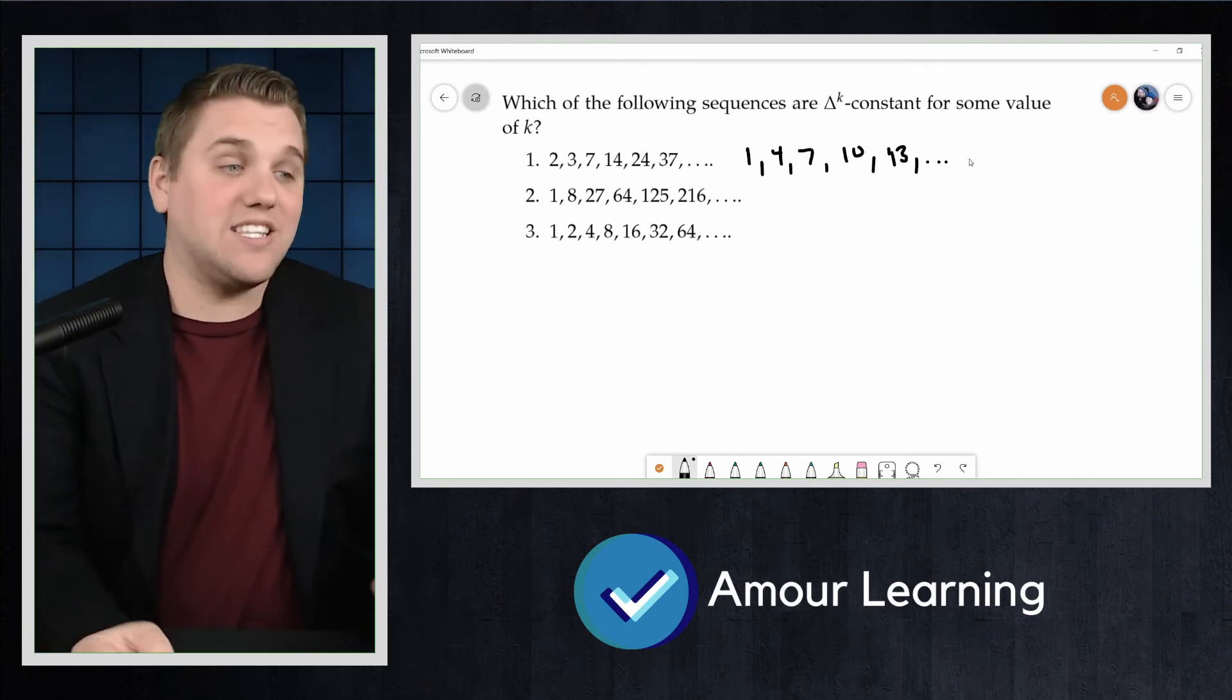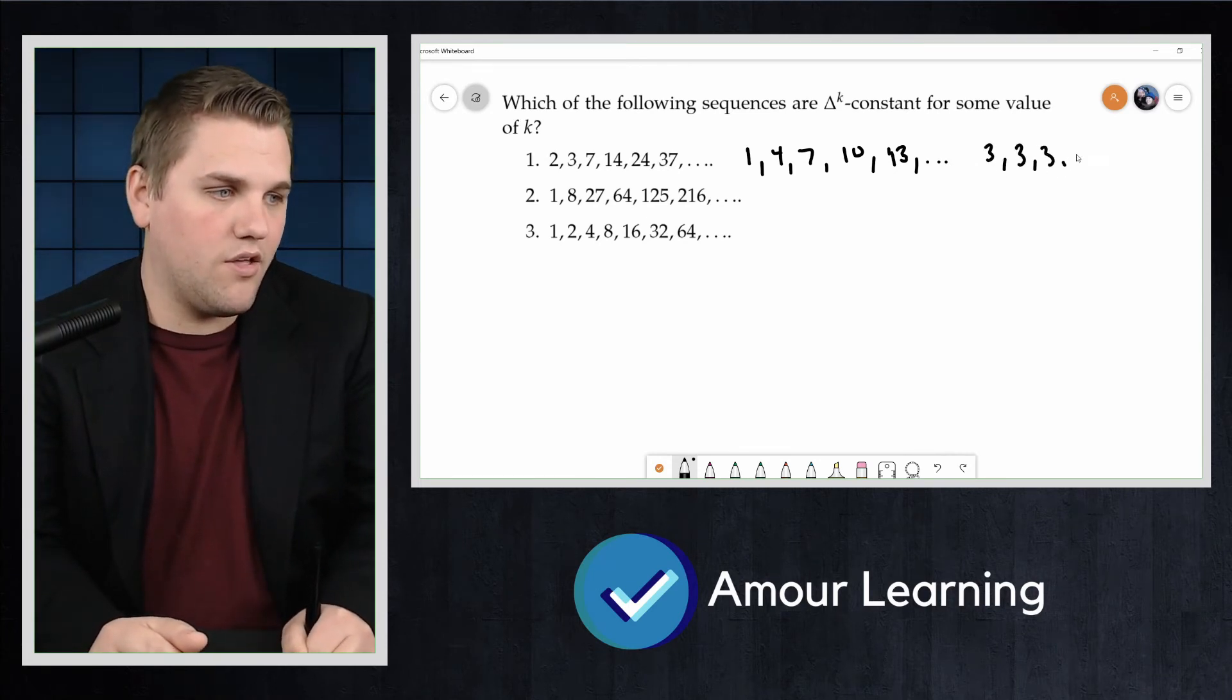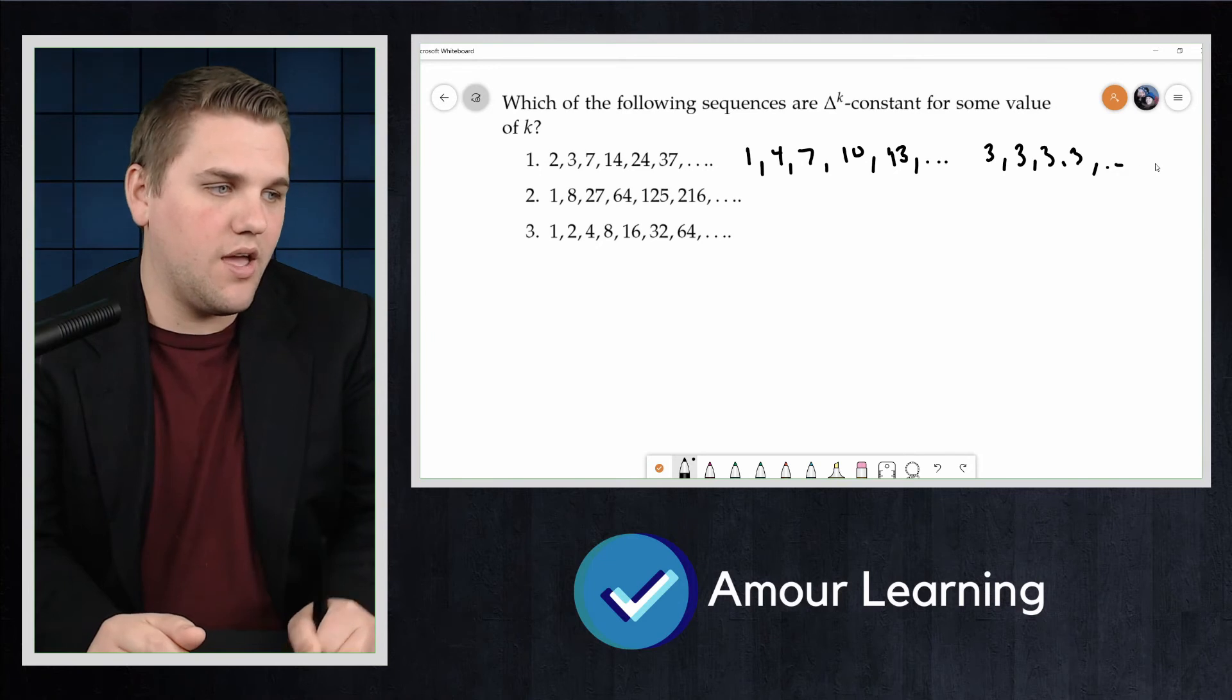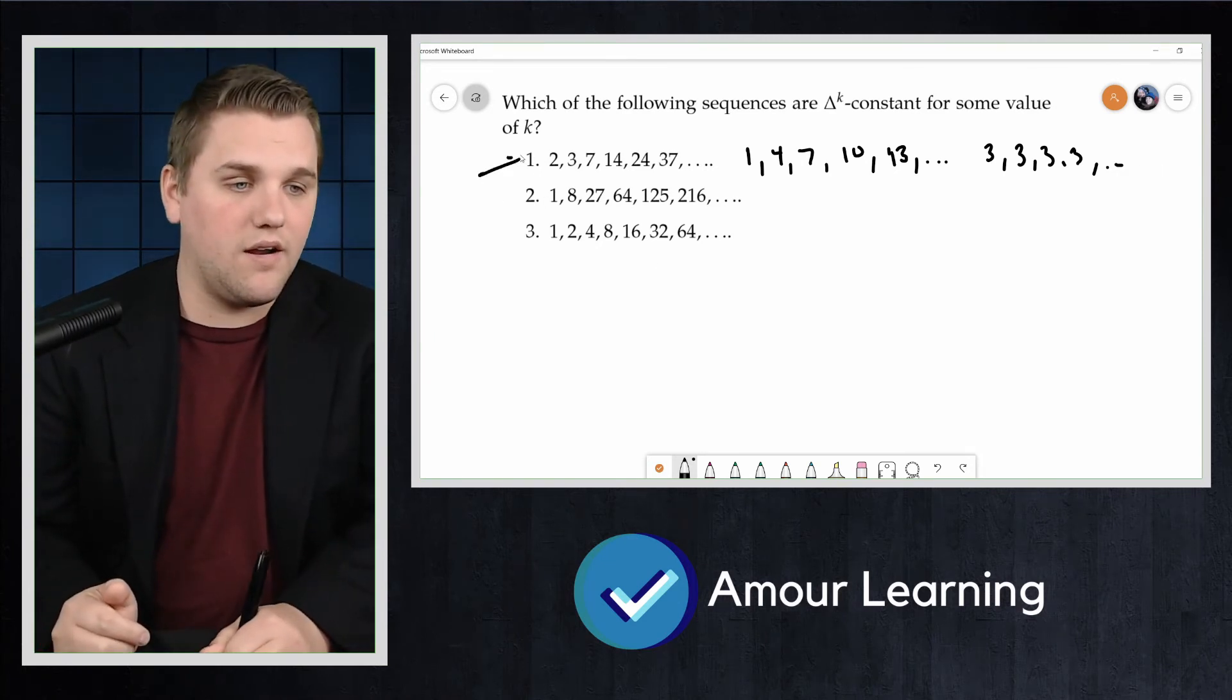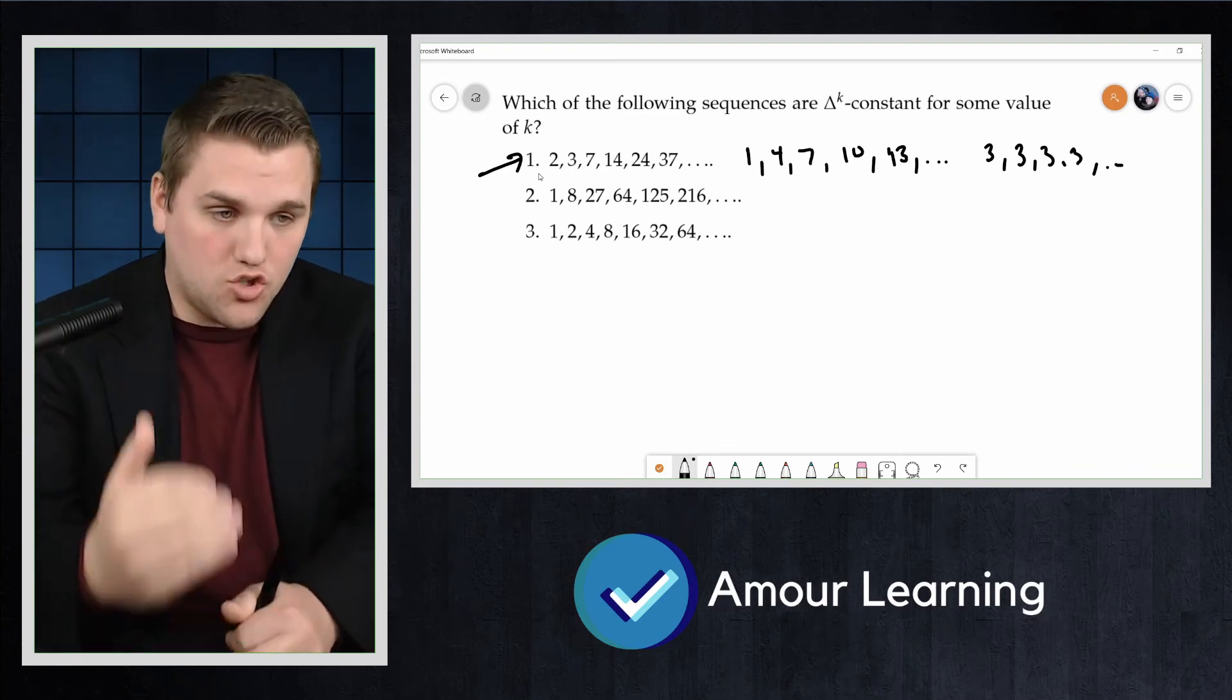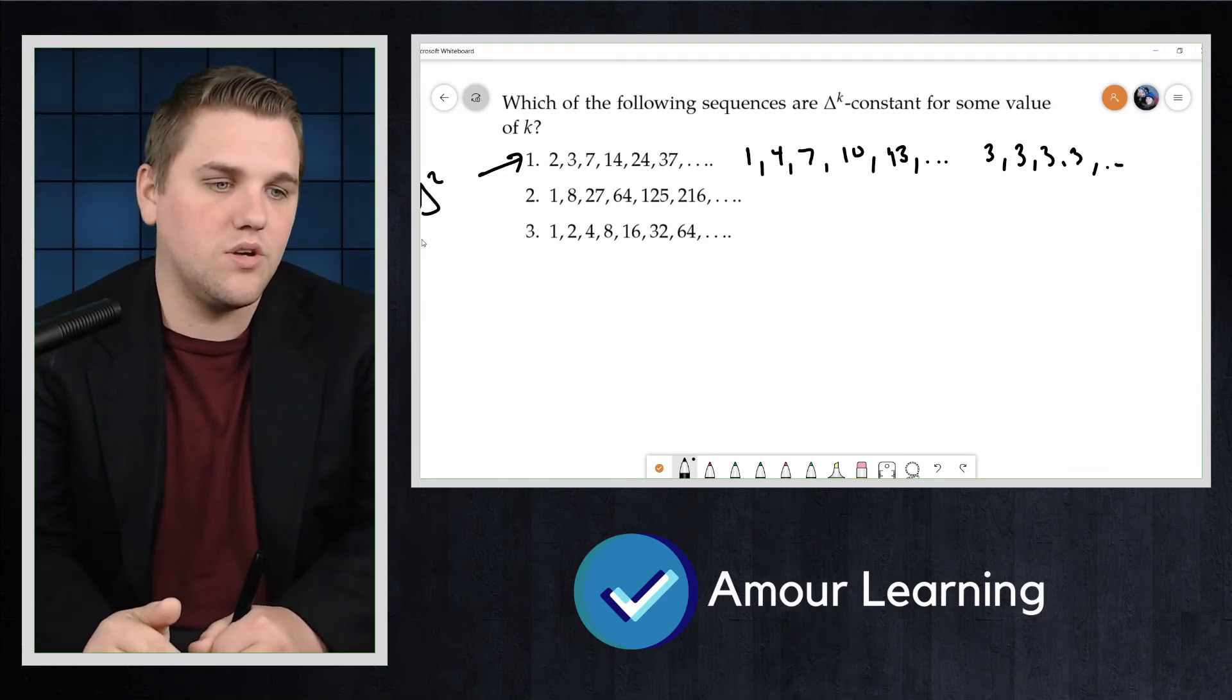Which itself has differences 3, 3, 3, 3, and so forth. Thus, this sequence right here is a delta squared constant sequence. Delta 2 constant.